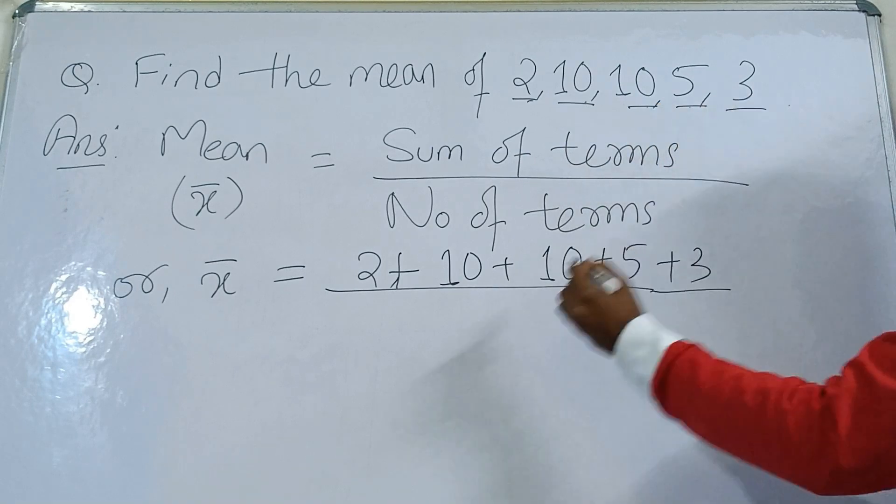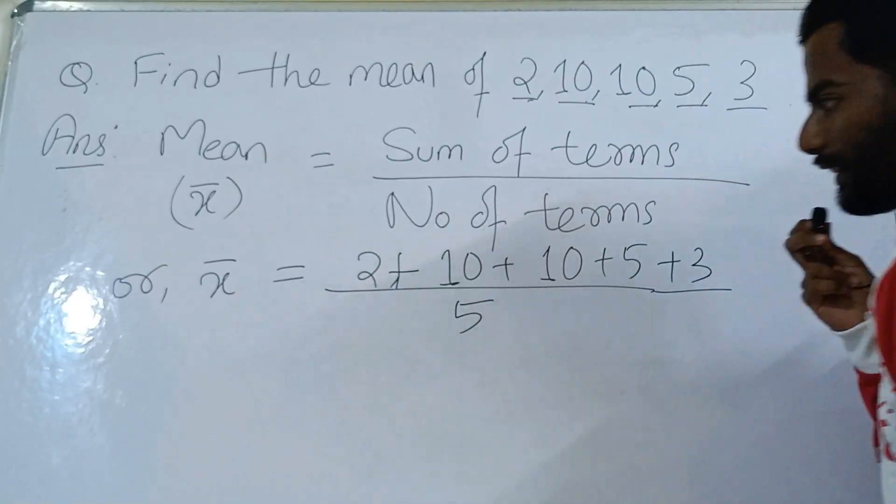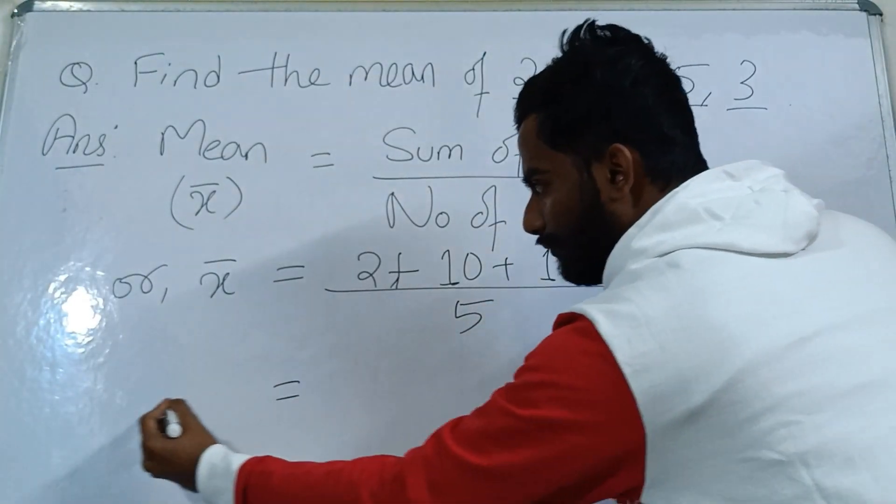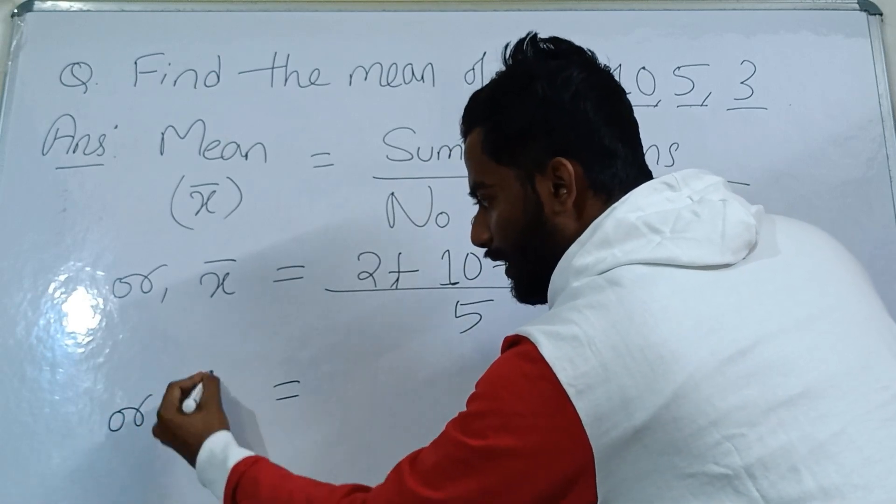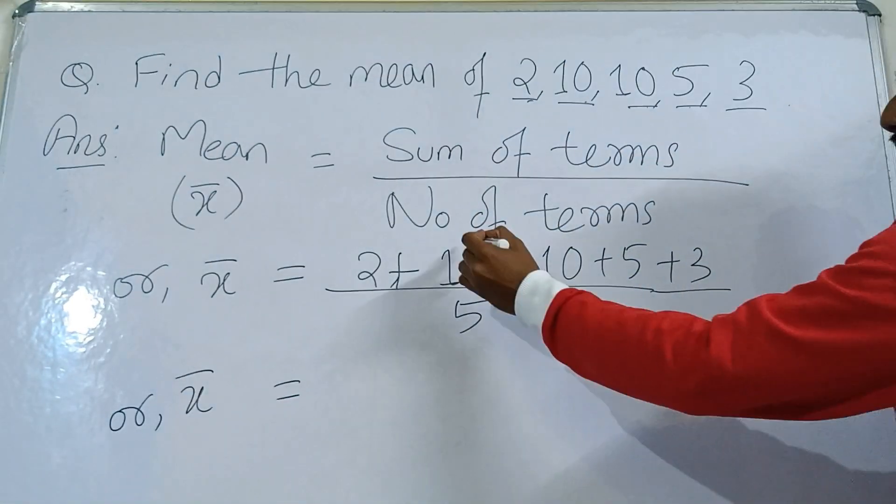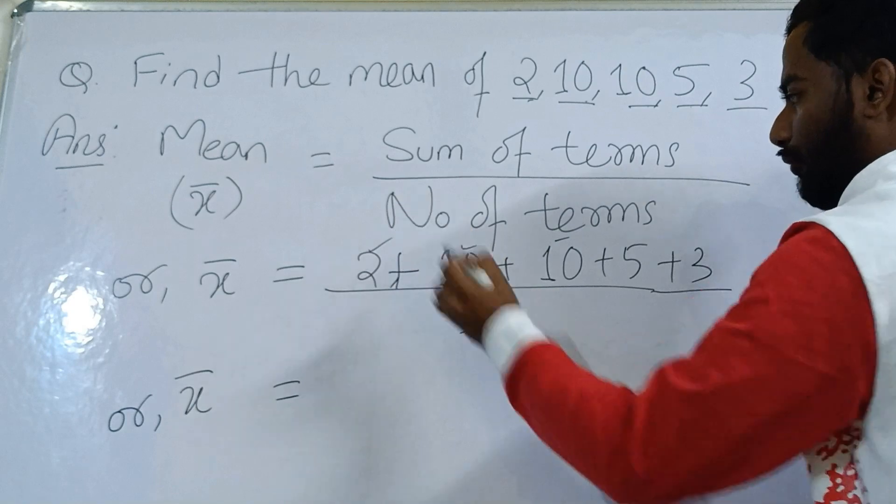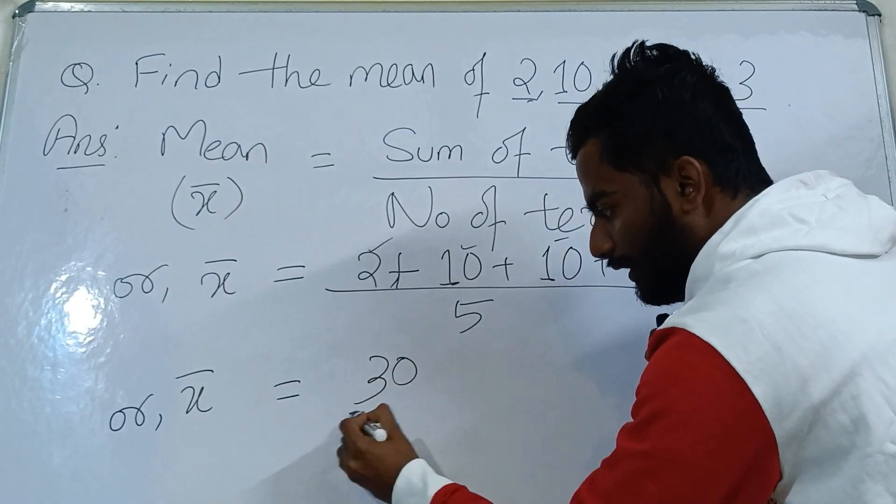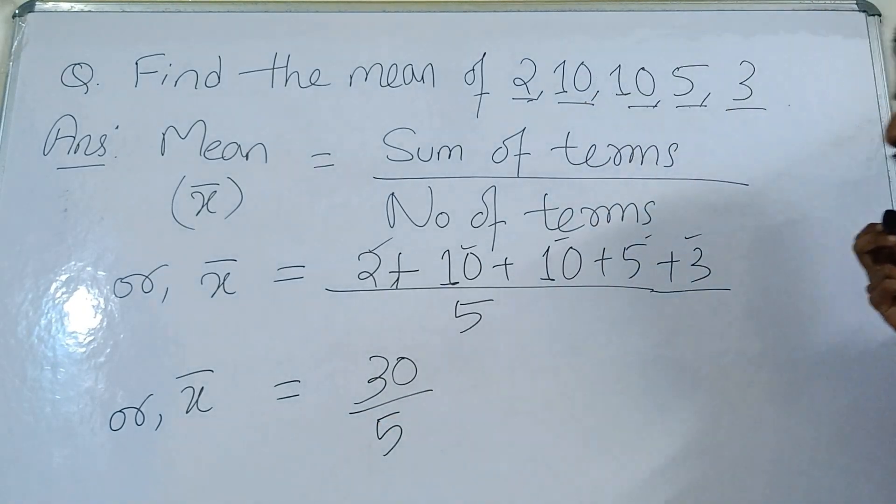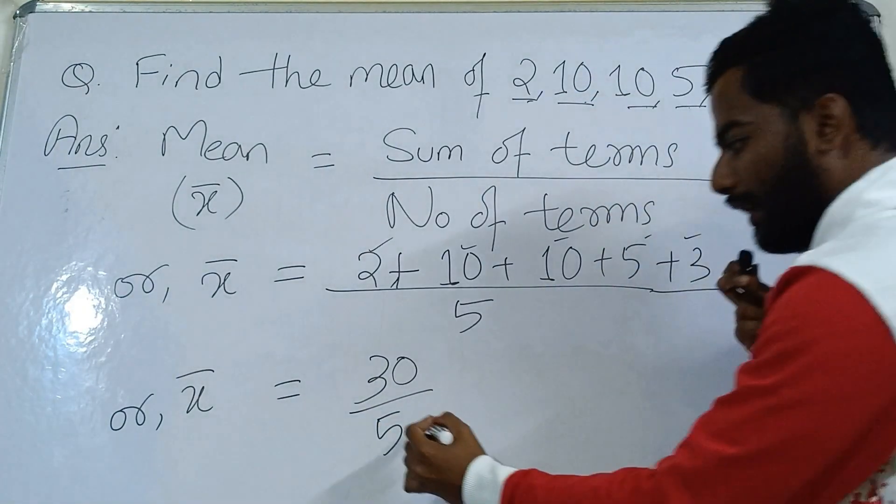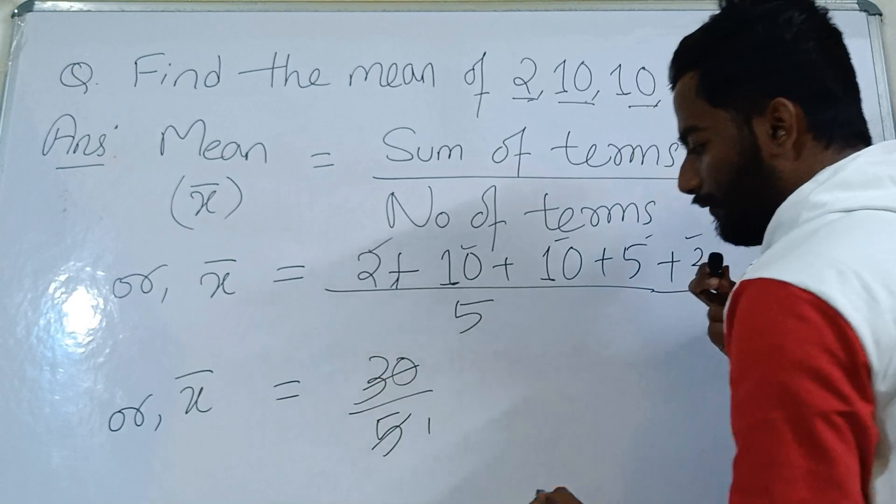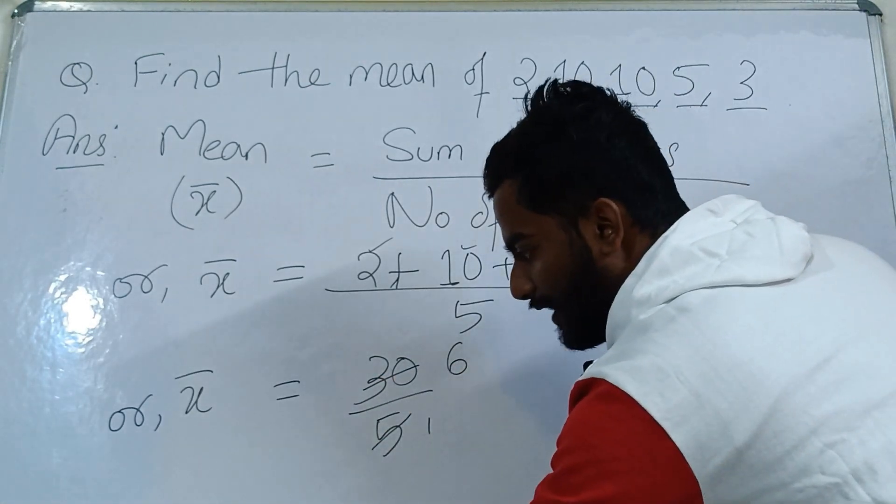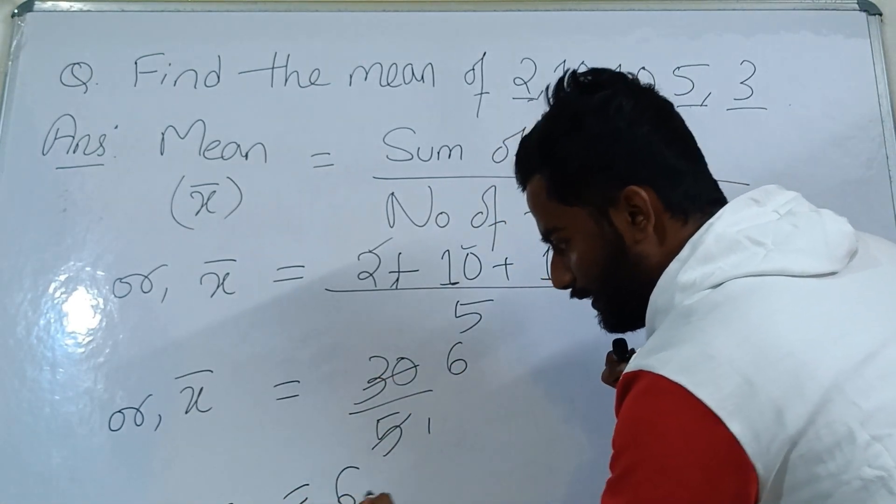Now let us do the addition. x̄ equals to 10 plus 10 is 20, and 2 is 22, 23, 24, 25, and 5 is 30. So here you get 30 divided by 5. Our addition is 30 divided by 5, which is 6. So x̄ equals to 6. Our answer is 6.